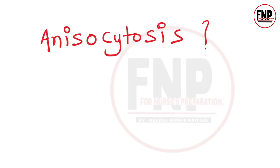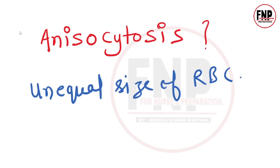Next term to know: Anisocytosis. The right answer is unequal size of RBCs (red blood corpuscles). If red blood cells are not of normal, equal size, the condition is called anisocytosis.